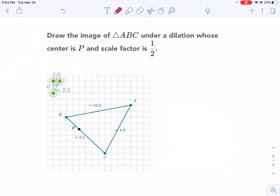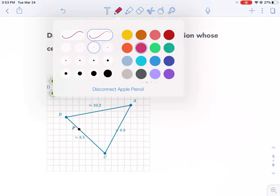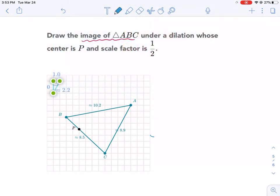Let's get started dissecting the information. It says draw the image of triangle ABC under a dilation whose center is P and scale factor is one half. Let's break this down. First we need to draw the image. That means we have been given the pre-image.